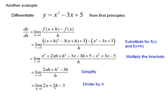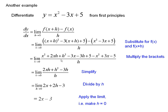After dividing by h, we get 2x plus 2h minus 3. There's only h remaining there, so we make h equal to 0, applying the limit, and there's our answer: 2x minus 3. That's the derivative.